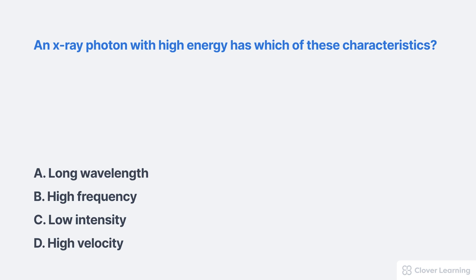The correct answer is B, high frequency. When frequency increases, this means there are more waves per second and shorter wavelength, which corresponds to a higher energy photon.